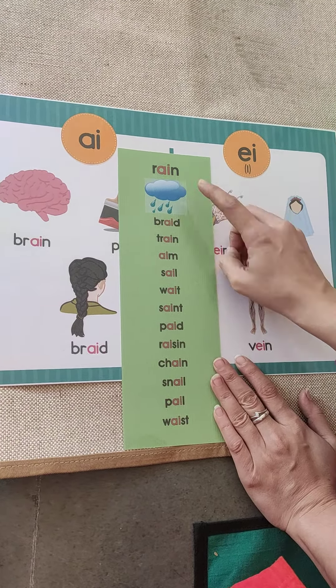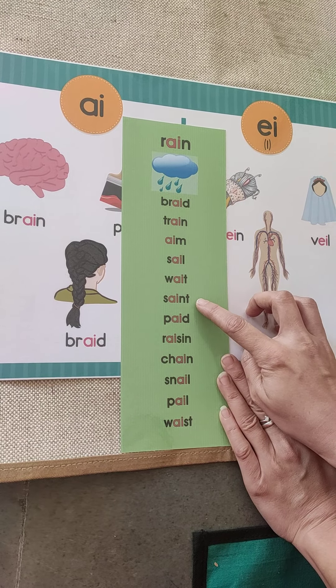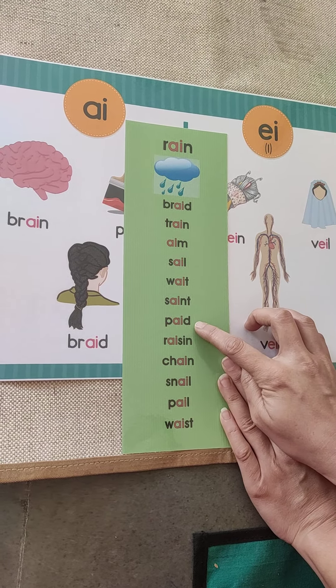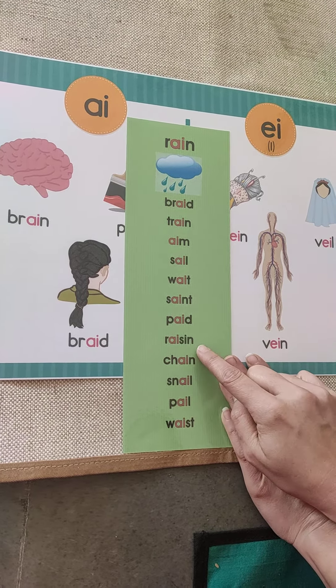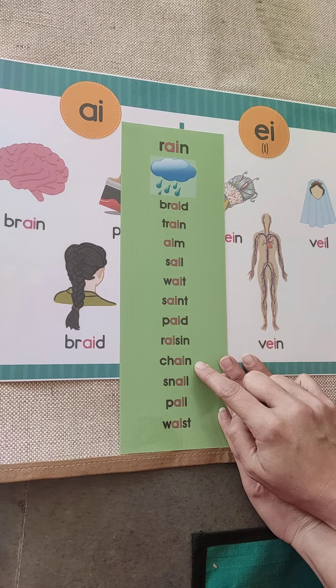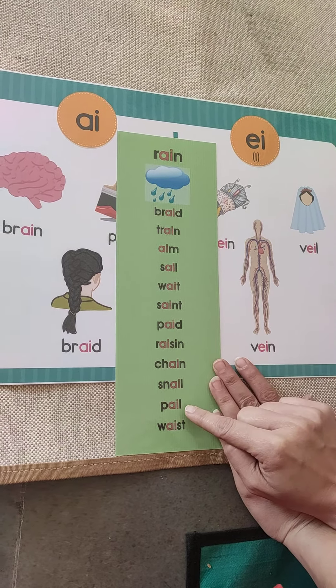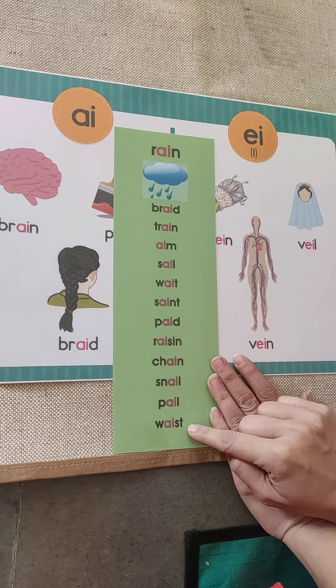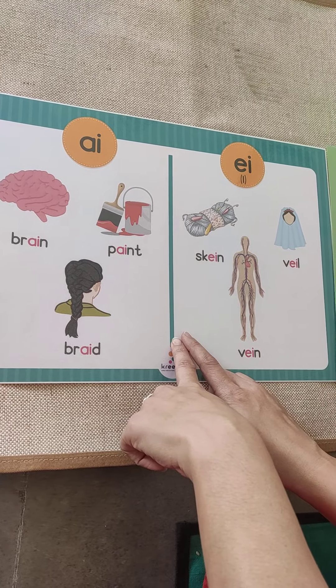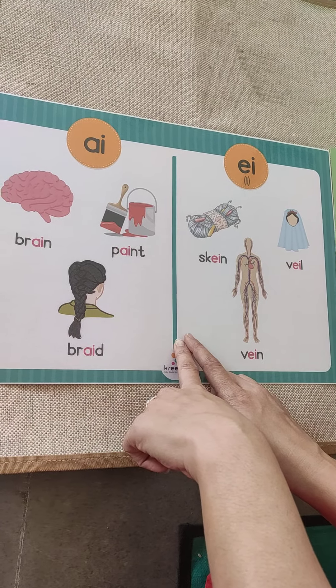Rain, braid, train, aim, sail, wait, saint, paid, resin, chain, snail, pale, waist — these were the words we had done in our last class. AI and EI which have the same sound of A.